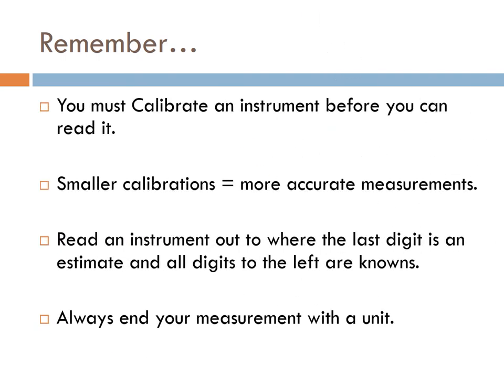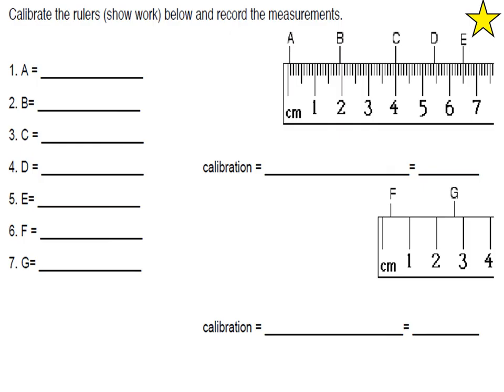So remember, you must calibrate an instrument before you can read it to understand what you can measure to. Smaller calibration equals more accurate measurements. So if you want to measure something accurately, you want to make sure you have the smallest value possible for that piece of equipment. Read an instrument out to where the last digit is an estimate and all the other digits are knowns. And always put a unit. On your practice, you're going to complete these seven values, the measurements. It's clear on the piece of paper. You want to make sure you calibrate both rulers as well. There's two different rulers to calibrate.